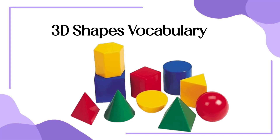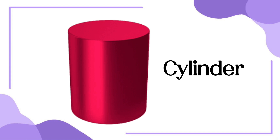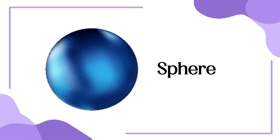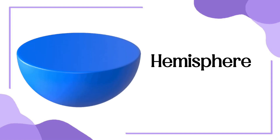3D Shapes Vocabulary in English. Cylinder. Sphere. Hemisphere.